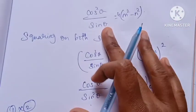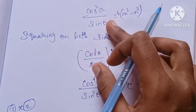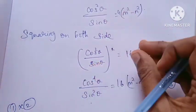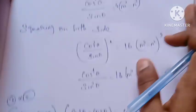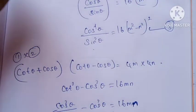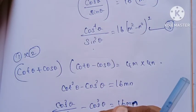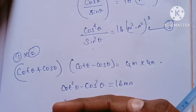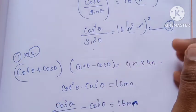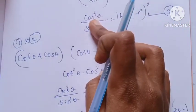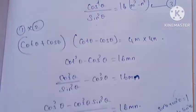Now equation 3 equals equation 4. Cos power 4 theta by sin squared equals cos power 4 theta by sin squared. So from equations 3 and 4, we have proved that (m squared minus n squared) whole squared equals mn, which equals LHS. Hence proved.